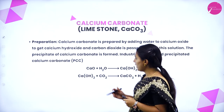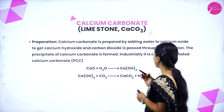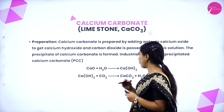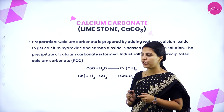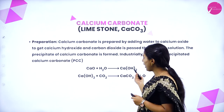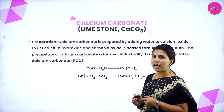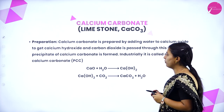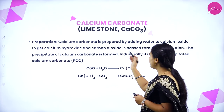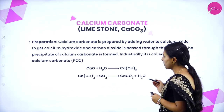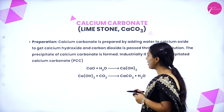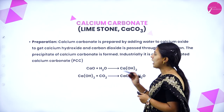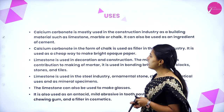Preparation: calcium carbonate is prepared by adding water to calcium oxide. Calcium oxide treated with water forms calcium hydroxide, and then carbon dioxide is passed through this solution, forming a precipitate of calcium carbonate. Industrially, this is called precipitated calcium carbonate.